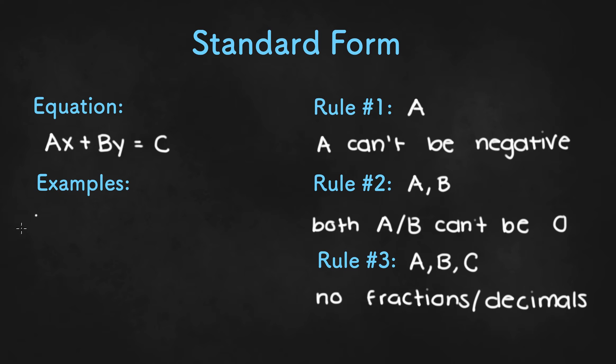So with that in mind, let's write a few examples. So A cannot be a fraction or a decimal and it can't be negative, so it has to be a whole number like 2. So we could have something like 2x minus 3y equals 15. So this would be an example of an equation in standard form.